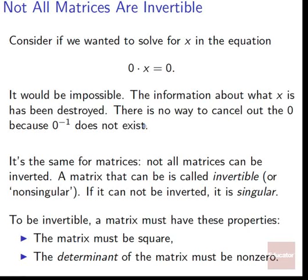A matrix that can be inverted is called invertible, or we might call it non-singular. If a matrix cannot be inverted, it's called singular. To be invertible, a matrix must have two properties: the matrix must be square, and the determinant of the matrix must be non-zero.